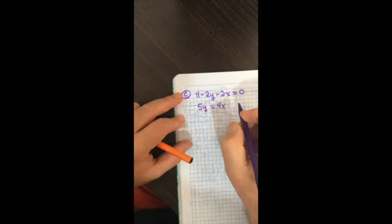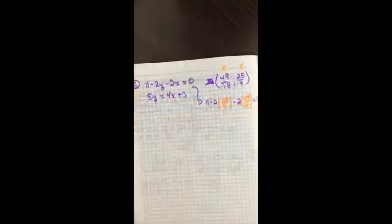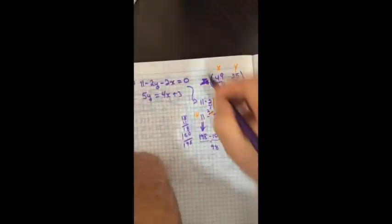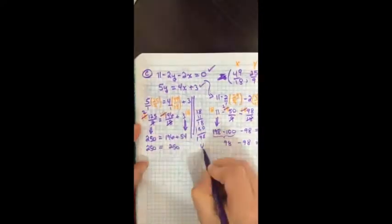Alright, what if it's a complicated one? What if it's got a bunch of fractions in it? So, let's do number letter C right here. Equations.